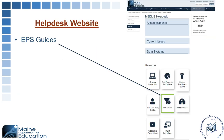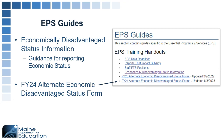Our guides for this work — for the alternate economic status form — can be found on the EPS guides page of the Help Desk website. On the EPS guides page you will find economically disadvantaged status information and the alternate economic status form. We have one from last year and a new updated one this year. The new FY24 form doesn't include any information about lunch, which may be less confusing to use for this reporting year.